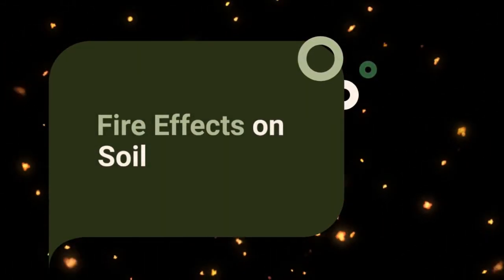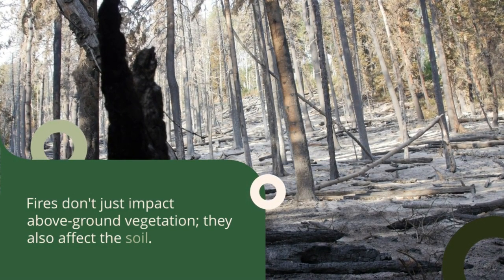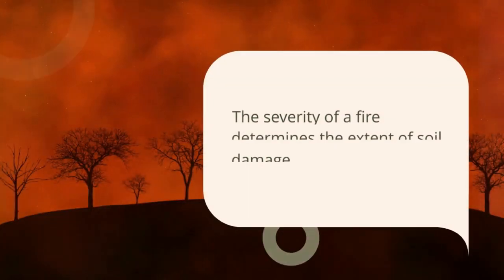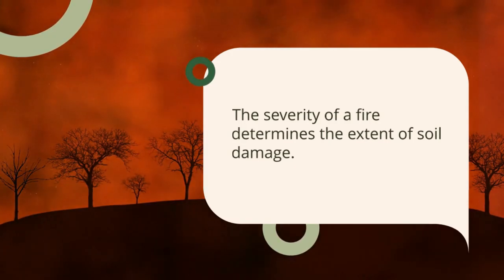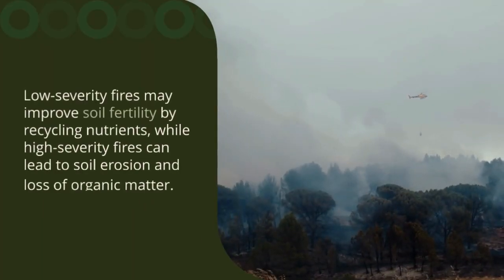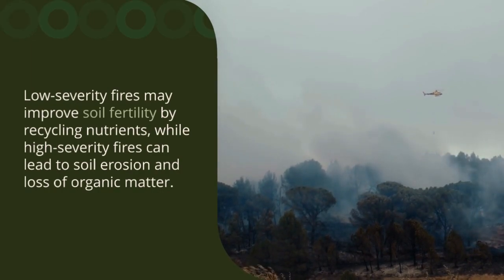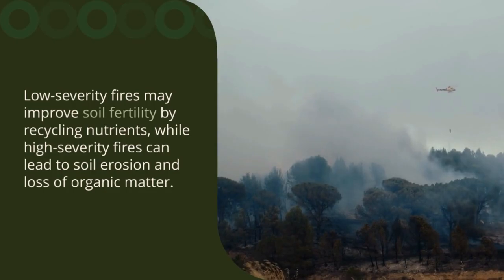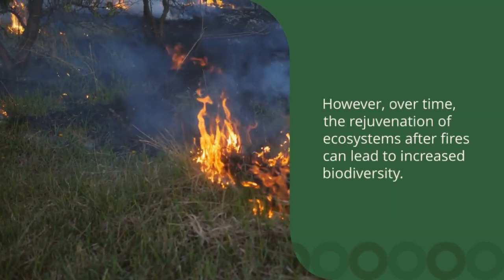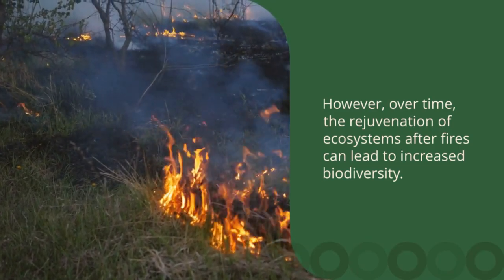Fire doesn't just impact above-ground vegetation — it also affects the soil. The severity of a fire determines the extent of soil damage. Low-severity fires may improve soil fertility by recycling nutrients, while high-severity fires can lead to soil erosion and loss of organic matter. However, over time, regeneration of the ecosystem after fire can lead to an increase in biodiversity.